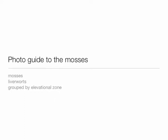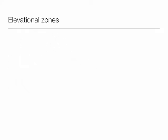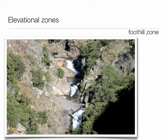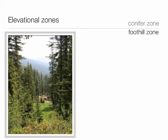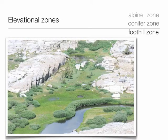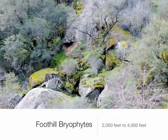Let's move on to the photo guide of the mosses. This guide is broken down into vegetation zones along an elevational gradient. In the foothill zone we can have chaparral, blue oak, and California buckeye woodland. This is a Mediterranean climate with hot dry summers and cool wet winters. The conifer zone starts with incense cedar, dogwood, ponderosa pine, then Jeffrey pine, sugar pine, white fir, and giant sequoia. Finally, in the alpine or subalpine regions: lodgepole and foxtail pine. Starting with the foothills, from 2,000 to 4,000 feet.